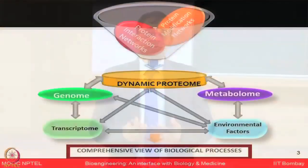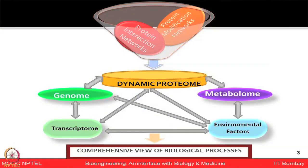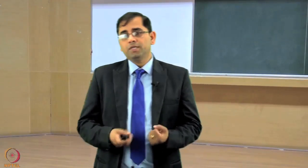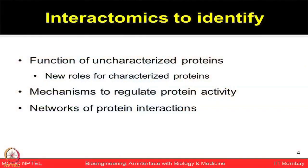To study the proteome, you have to look into protein interaction networks as well as protein modifications like different types of PTMs, for example phosphorylation. All of these are complex processes involved in governing any physiological system. Interactomics aims to identify the function of uncharacterized proteins, trying to define new roles for characterized proteins, understand mechanisms to regulate protein activity, and map the possible networks of protein interactions.